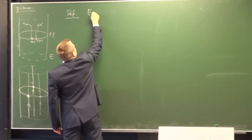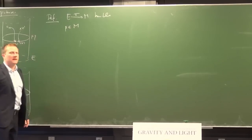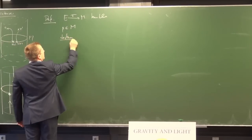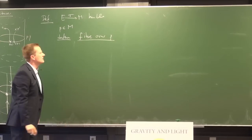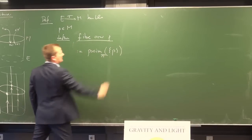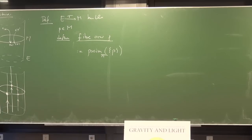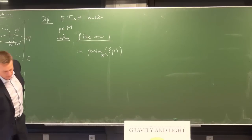Definition: a fiber. If (E, π, M) is a bundle and P is a point of the base space, we define the fiber over P as the pre-image of the set {P} with respect to the projection map. For instance, the pre-image of a point on the base is an entire vertical line on the cylinder. The fibers are not the primarily given thing — it's the bundle projection that is primary; the fibers are a derived object.